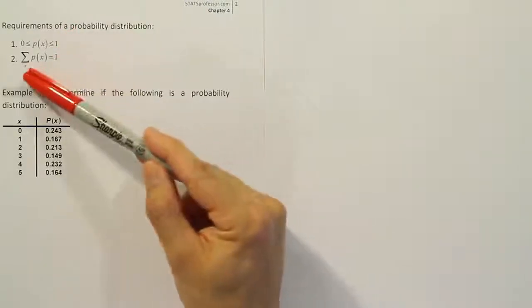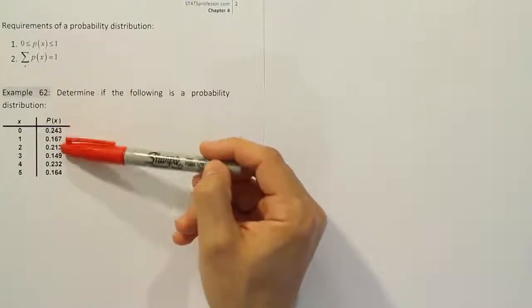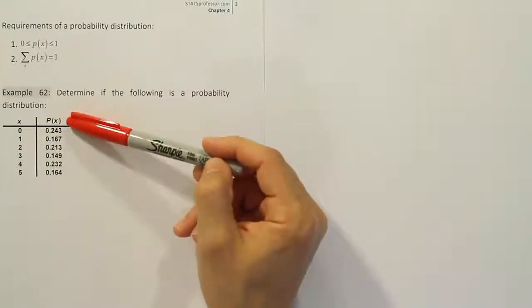Now condition 2 just says the sum of all the probabilities must add up to 1. This column, in other words, when you add it all up together, should be equal to 1.